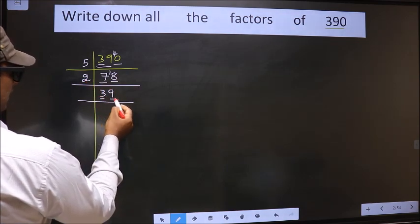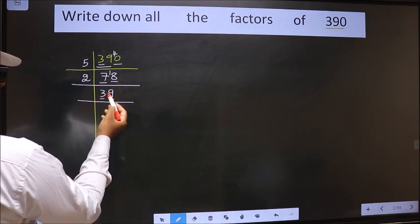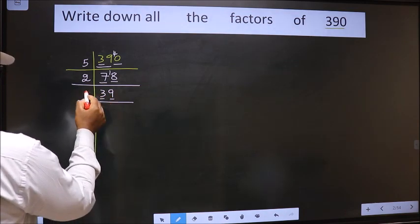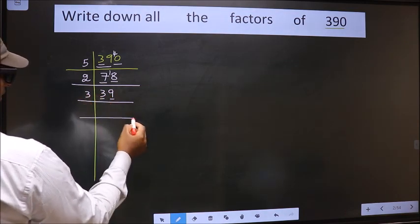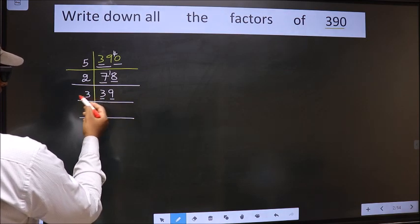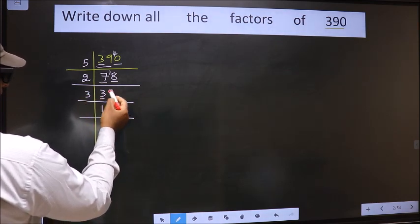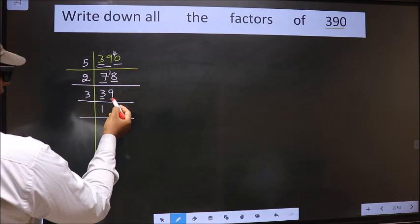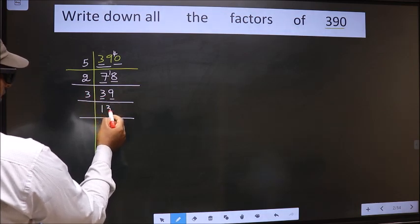Now here we have 3, here it is 9, each digit is divisible by 3. So we take 3 here. The first number 3, when do we get 3 in 3 table? 3 1s 3. The other number 9. When do we get 9 in 3 table? 3 3 is 9.